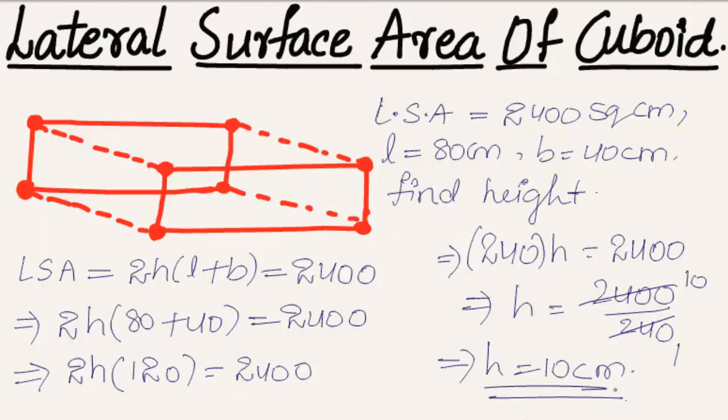At last we can conclude by saying the lateral surface area of cuboid equals 2h(l + b) square units. This was a basic introduction on lateral surface area of cuboid. Hope you understood the concept. Do like and subscribe to vteachacademy.com. Thanks for watching. Have a nice day.